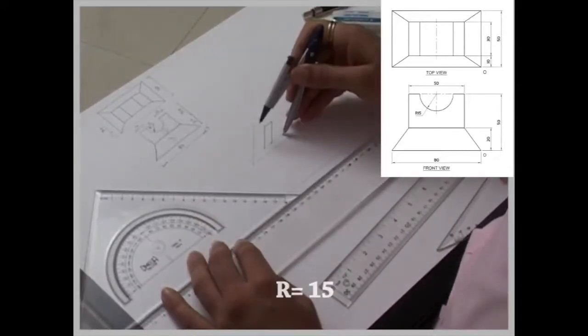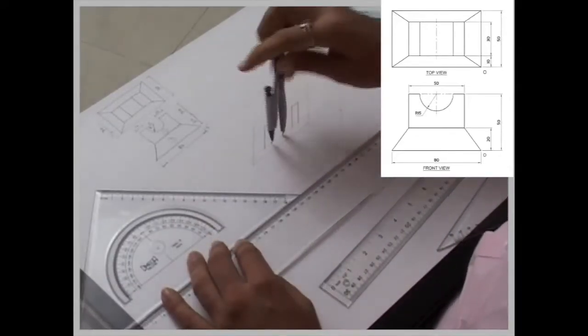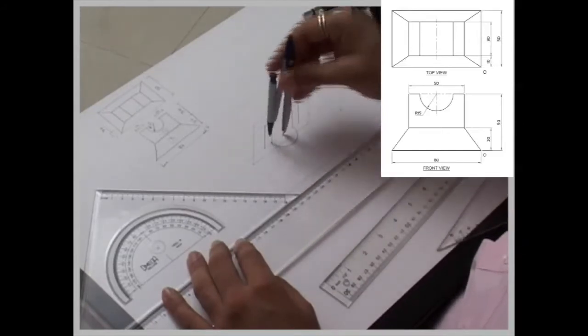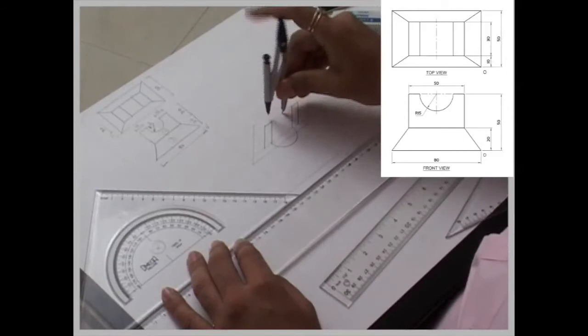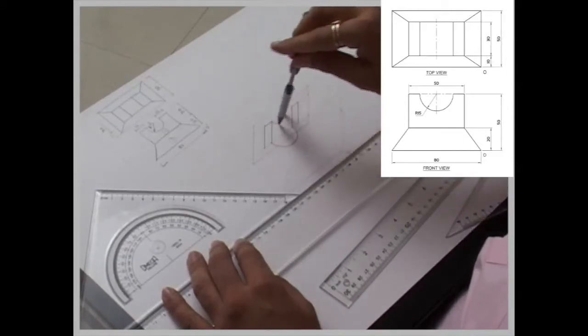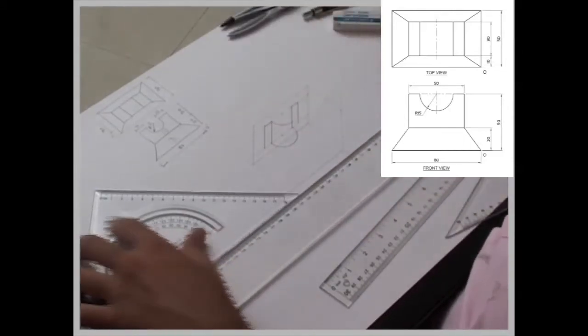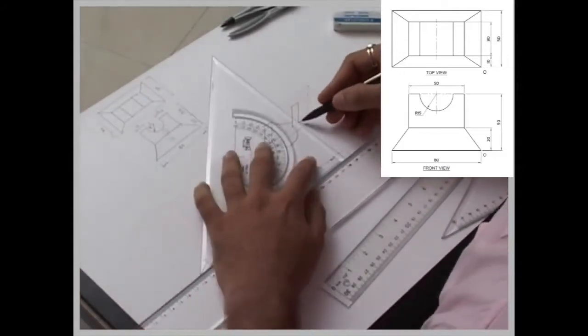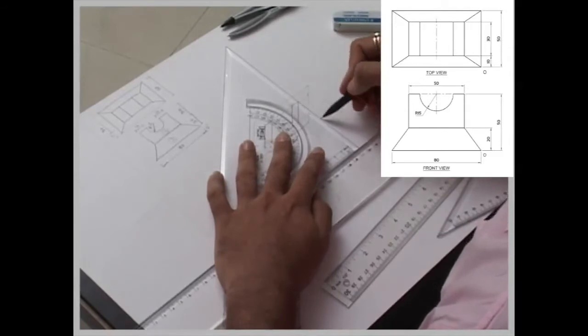That will take 15 degrees. Go ahead by 30 and again you draw, so you need to go down by also 30 from every point.